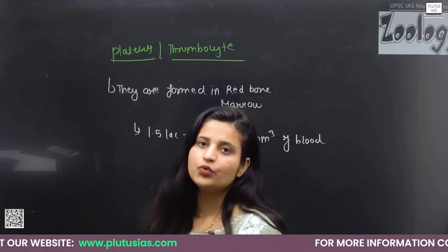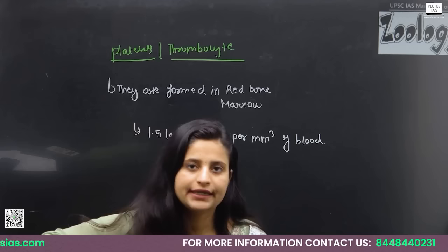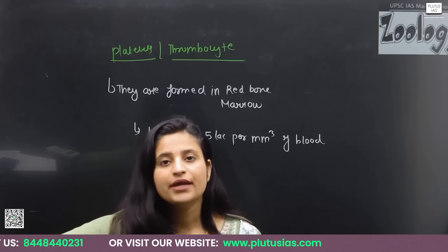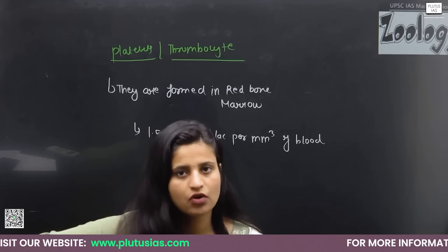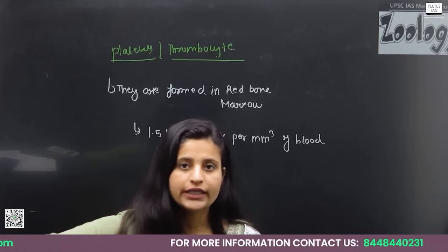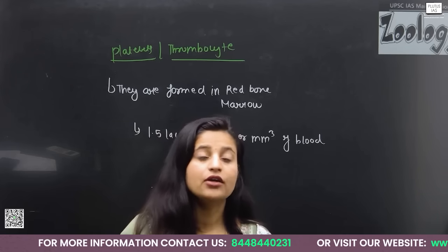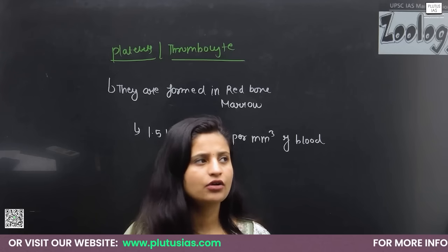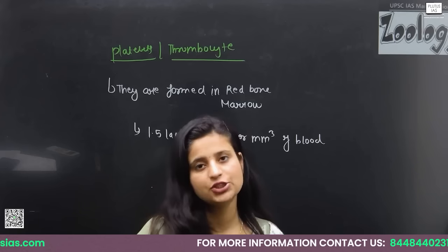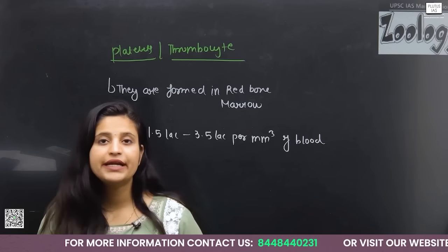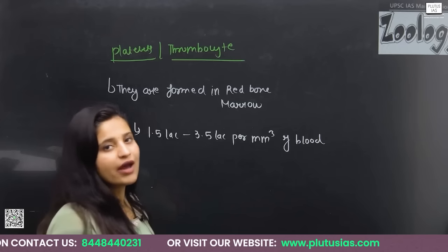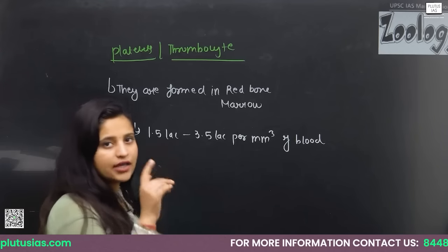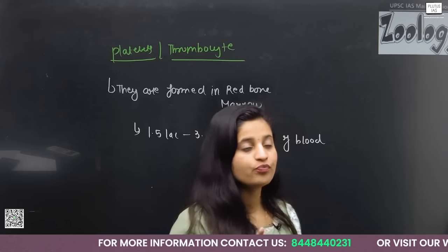During dengue infection, platelet count decreases — sometimes to only 5,000 to 10,000 — which can result in internal bleeding or hemorrhage, because platelets are responsible for clotting. The dengue virus attacks platelets and reduces their count.